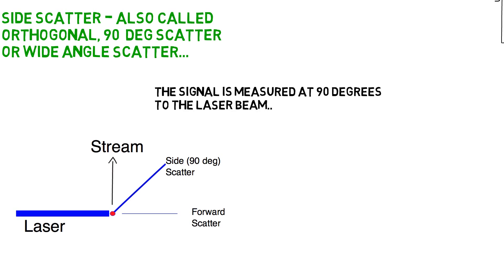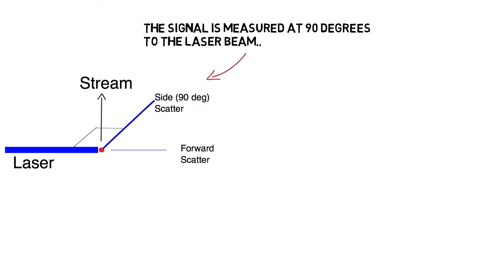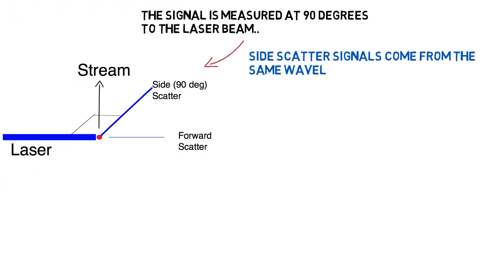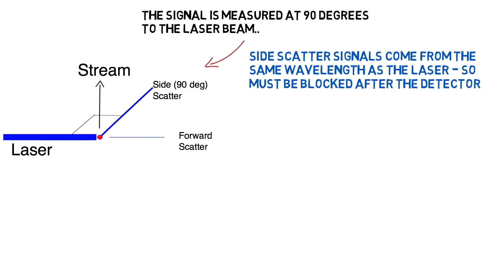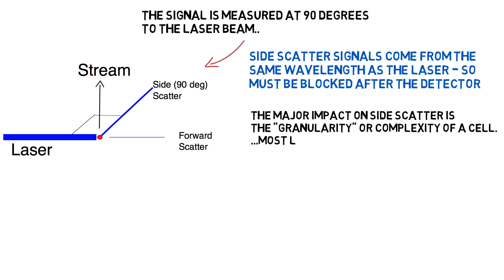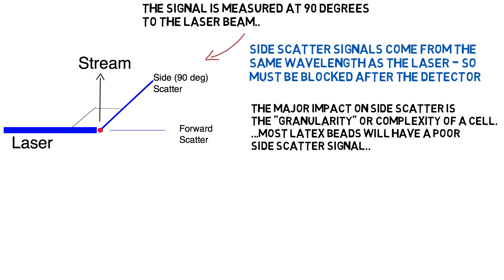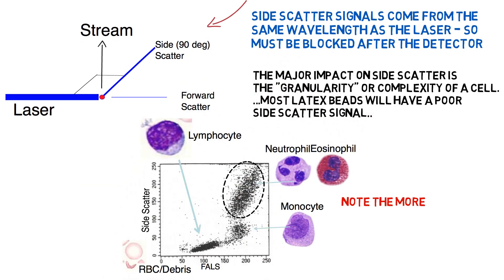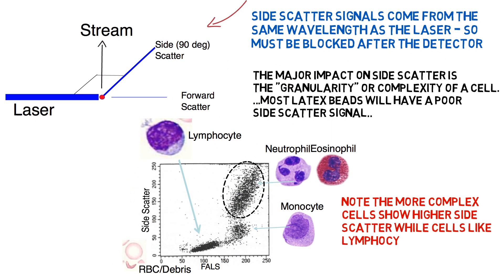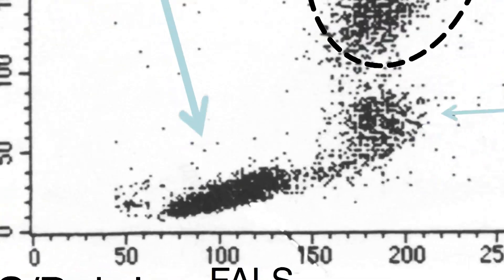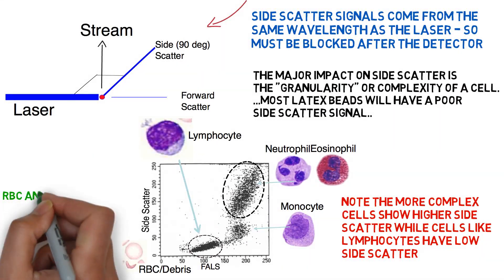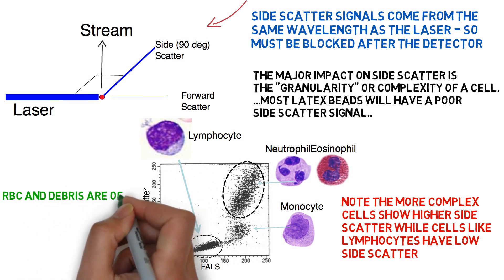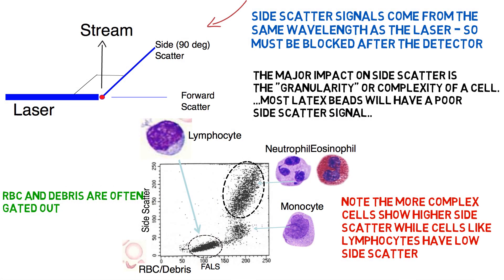The difference between side scatter and fluorescence is that the side scatter signal is the same wavelength as the laser beam, which is why you have to block this light after the side scatter detector — otherwise you'd overload the fluorescence detectors with laser light. The major impact on side scatter signal is the granularity or complexity of a cell. Neutrophils and eosinophils have a lot of granularity, so they produce a large 90-degree light scatter signal, while latex beads and lymphocytes have little to no structural complexity and have a very low side scatter signal.